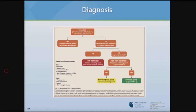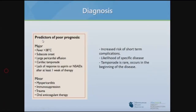For most patients, diagnosis and treatment of pericarditis can be done as an outpatient. The overall risk is low. However, some risk factors for poor prognosis include fever, large pericardial effusion, tamponade, lack of response to conventional treatment, and subacute onset. Poor prognosis indicators suggest increased risk of short-term complications and likelihood of diseases beyond viral pericarditis, such as autoimmune diseases. Tamponade is rare — about one percent of pericarditis — and tends to happen early in the disease.